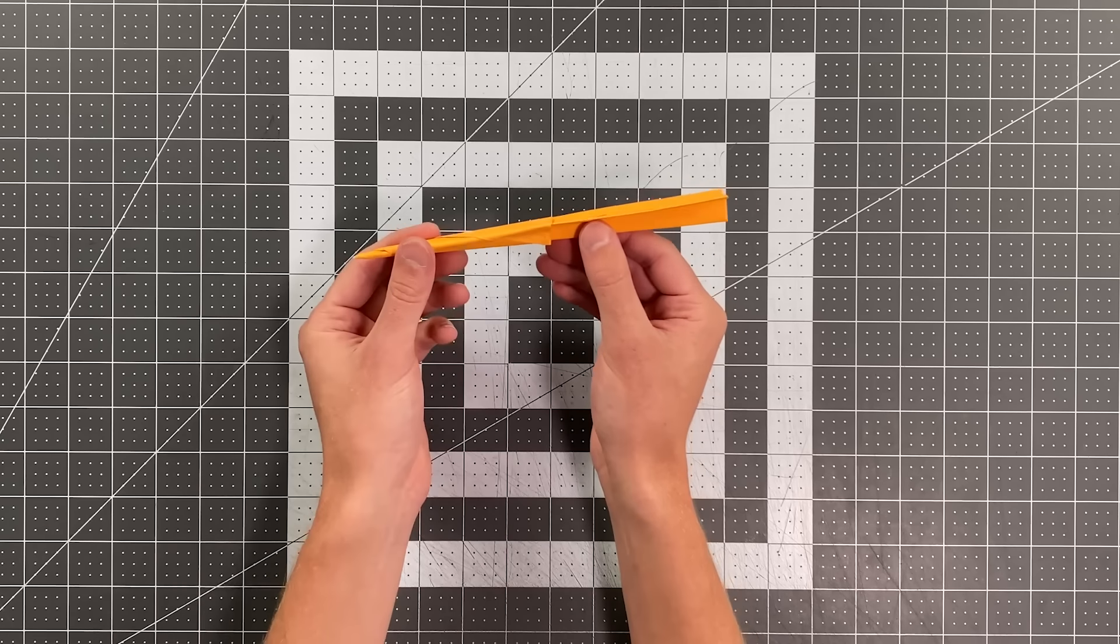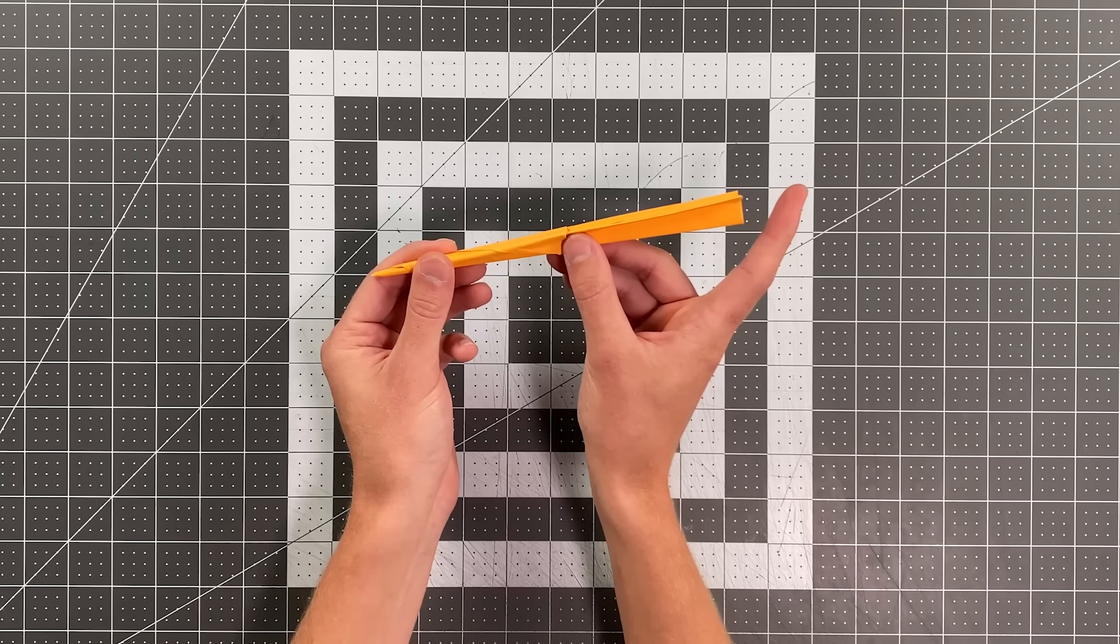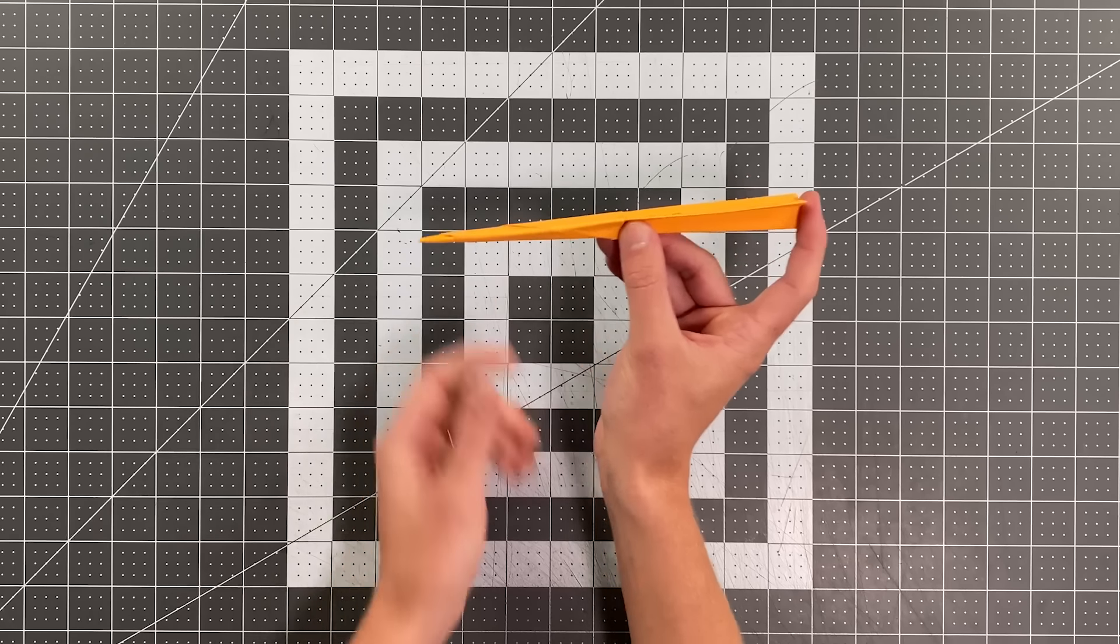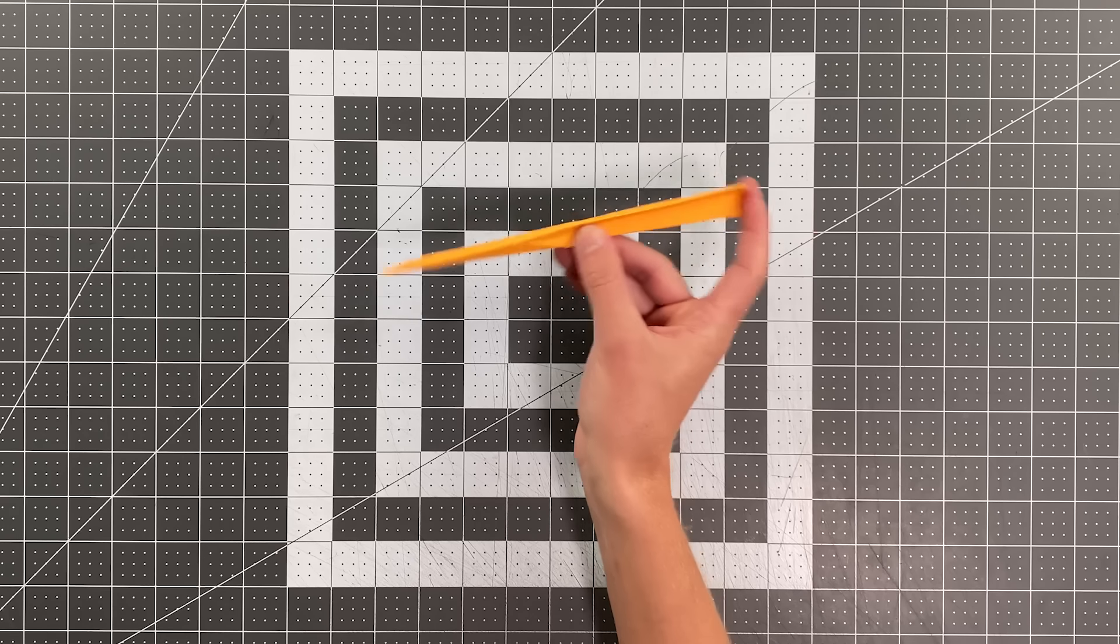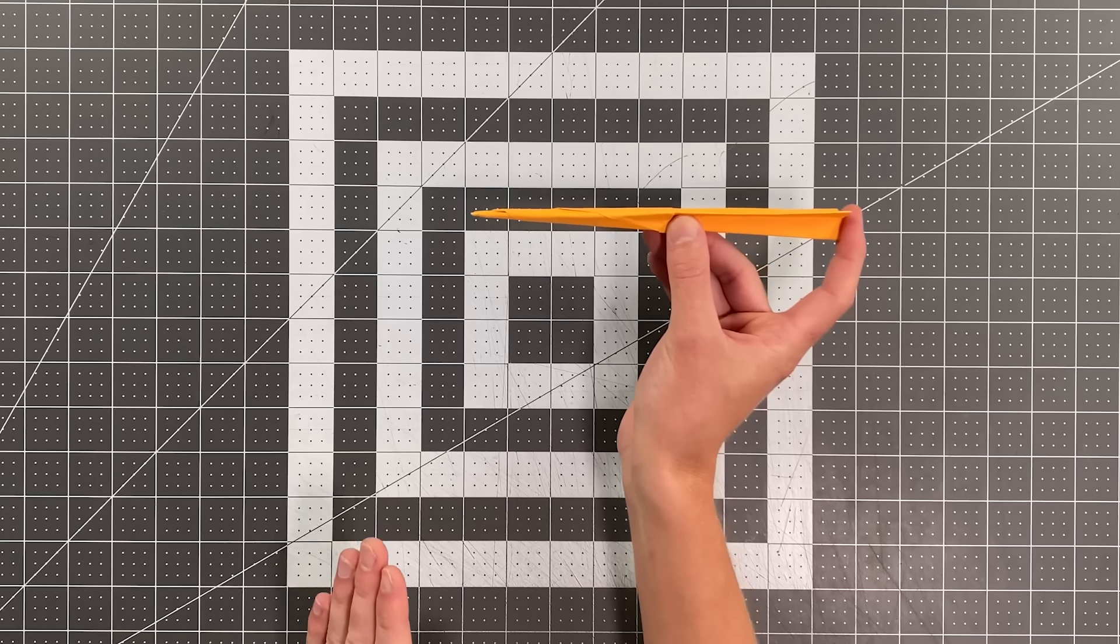But then I also tested a third method as well, which is kind of a hybrid between the two, holding it like a normal plane but placing my finger on the back edge. So let's see from the flight tests that I did which way worked best for me.